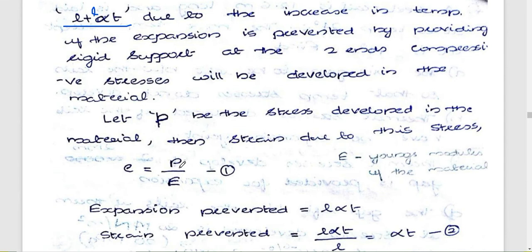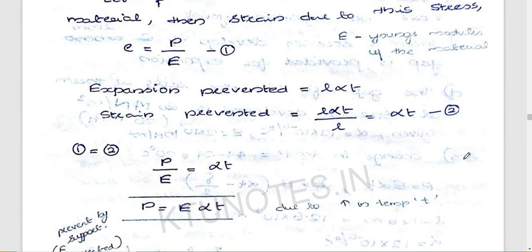From the temperature stresses, we will discuss the type of strain. Strain is delta L by L, which is L alpha T divided by L, giving us alpha T. Strain is also stress by E. So stress equals E into alpha T.